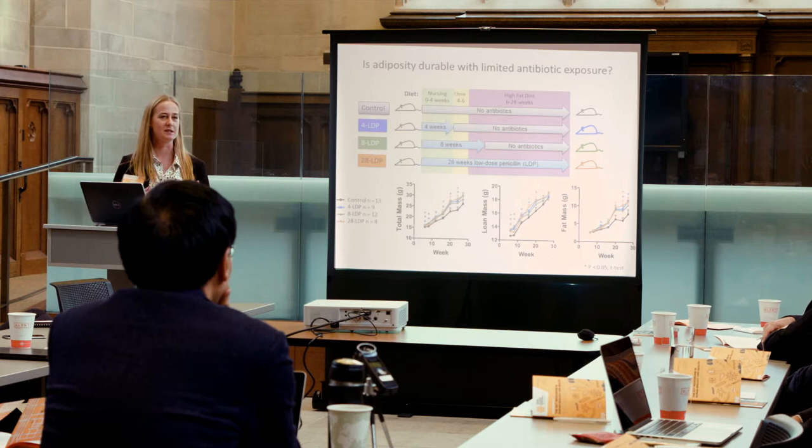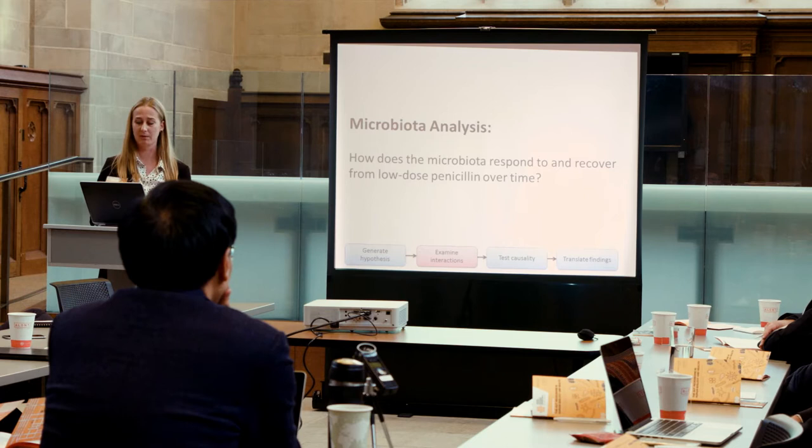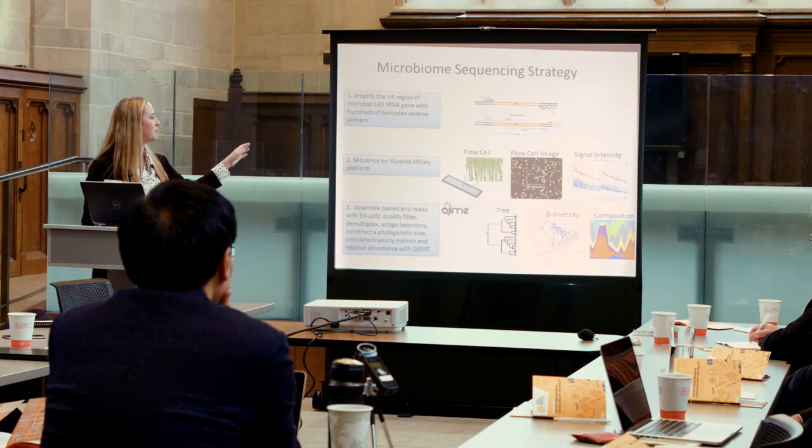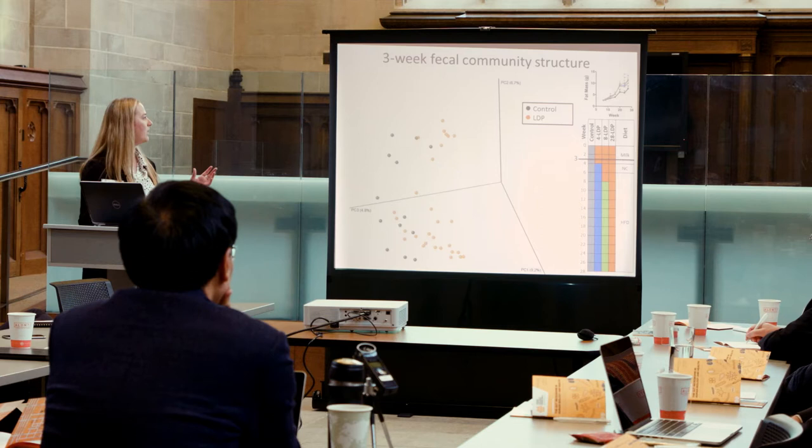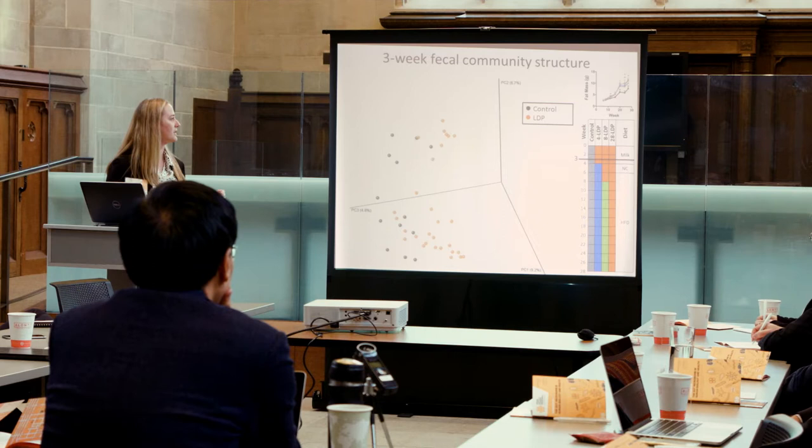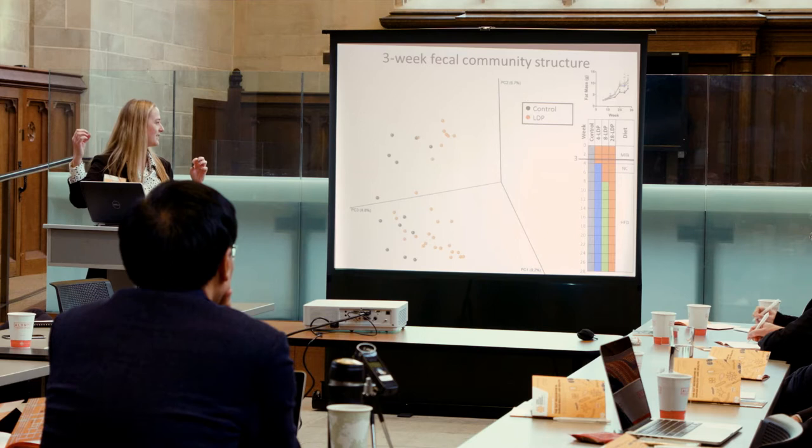We sequenced the V4 region of the 16S gene on a MiSeq platform and used QIIME for downstream analysis. This is a PCoA plot where each dot represents a mouse — black for control and orange for low-dose penicillin — clustered out in 3D space. There is significant clustering, and all this tells us is that penicillin changes the microbiome, which is really not a surprise.